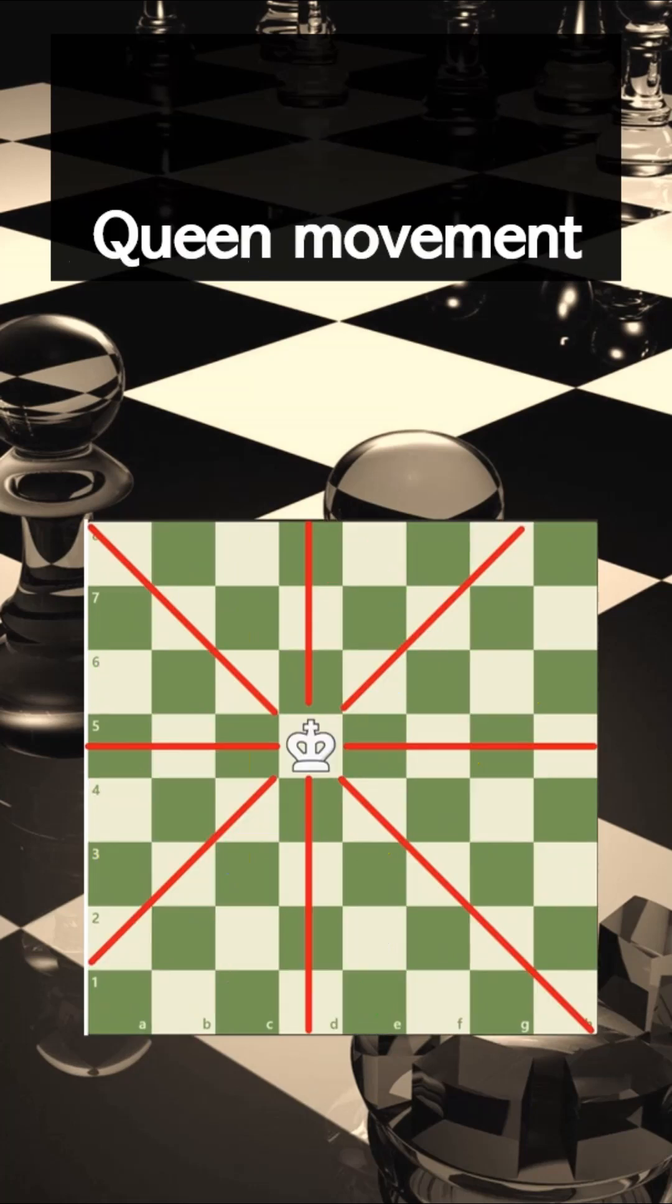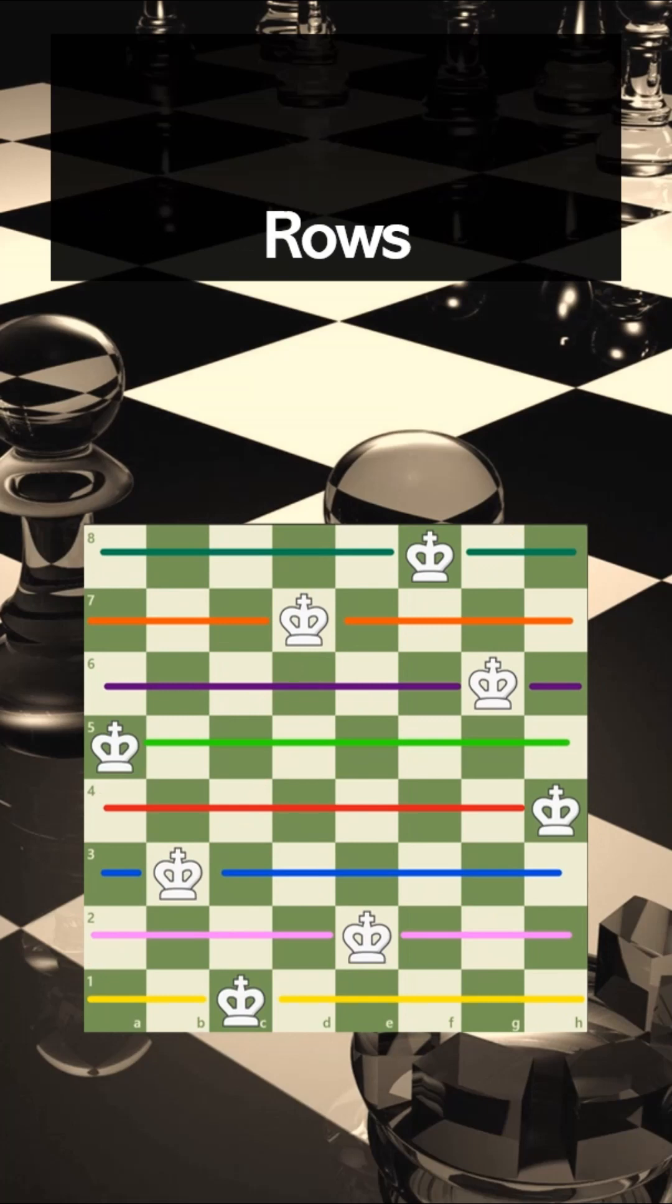So we have to find some tricks to make this easier. First, let's look at the queen's attacking range—both horizontal, vertical, and diagonal. She covers a lot of space. However, we can use this to our advantage.